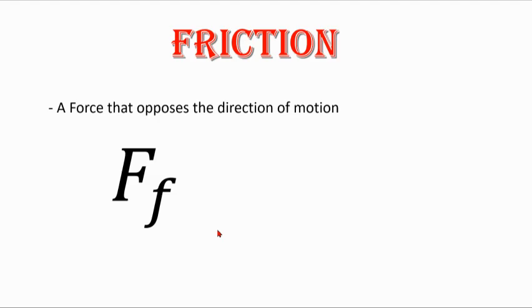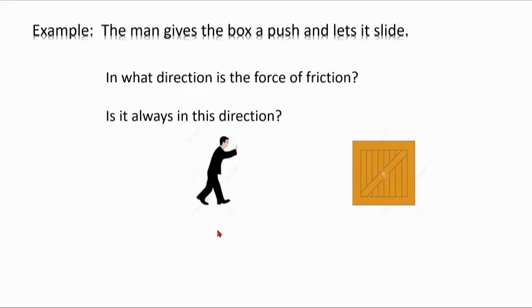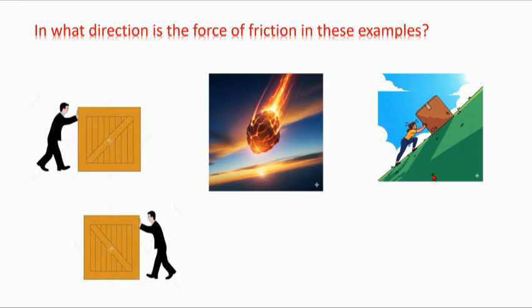So what would be the direction of the friction force in this case? Well, the box was moving to the right. Something caused it to stop. So something had to be pushing on it in the opposite direction, to the left. So in these examples, I'll show you the arrow in the direction of the friction force. He pushes the box to the right. You'll see that the friction force is to the left.